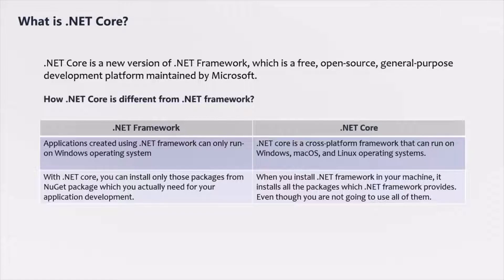Another difference is that when you install .NET Framework on your machine, it installs all the packages that .NET Framework provides, even though you are not going to use all of them. But with .NET Core, you can install only those packages from NuGet which you actually need for your application development. In this way, .NET Core speeds up performance, reduces the memory footprint, and becomes easy to maintain.